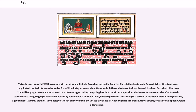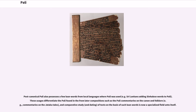Virtually every word in Pali has cognates in the other Middle Indo-Aryan languages, the Prakrits. The relationship to Vedic Sanskrit is less direct and more complicated; the Prakrits were descended from old Indo-Aryan vernaculars. Influence between Pali and Sanskrit has been felt in both directions. The Pali language's resemblance to Sanskrit is often exaggerated by comparing it to later Sanskrit compositions written centuries after Sanskrit ceased to be a living language, which were influenced by developments in Middle Indic. Post-canonical Pali also possesses a few loanwords from local languages where Pali was used, and comparative study of texts on the basis of such loanwords is now a specialized field unto itself.